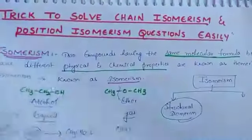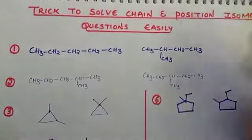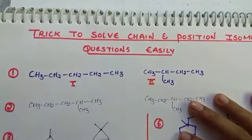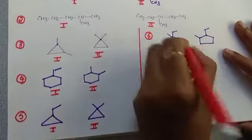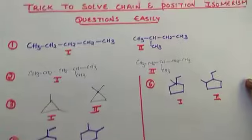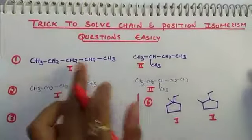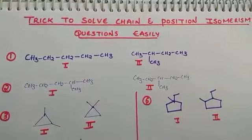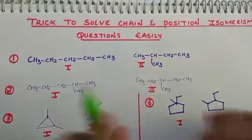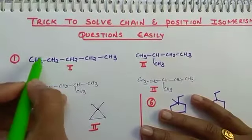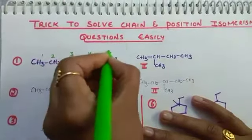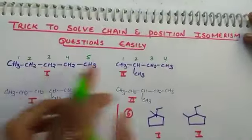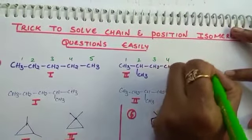Let us look at the questions. For structure 1 and 2, find the relationship. Structure 1 has a parent chain of 1, 2, 3, 4, 5 carbons. Structure 2 has a parent chain of 1, 2, 3, 4 carbons. The parent chain is different — 5 versus 4 — so these two are chain isomers.